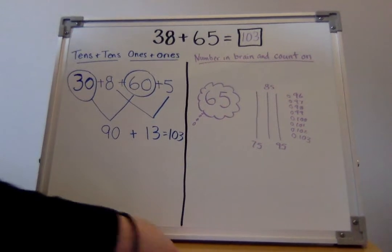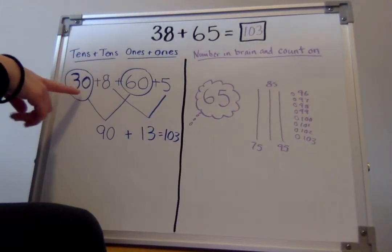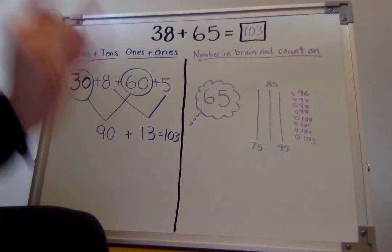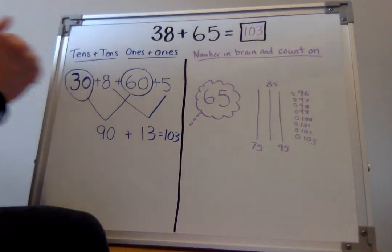So, when I did the tens with the tens strategy, I added 30 plus 60 and got 90. If you got that too, show me your I agree symbol. Awesome.